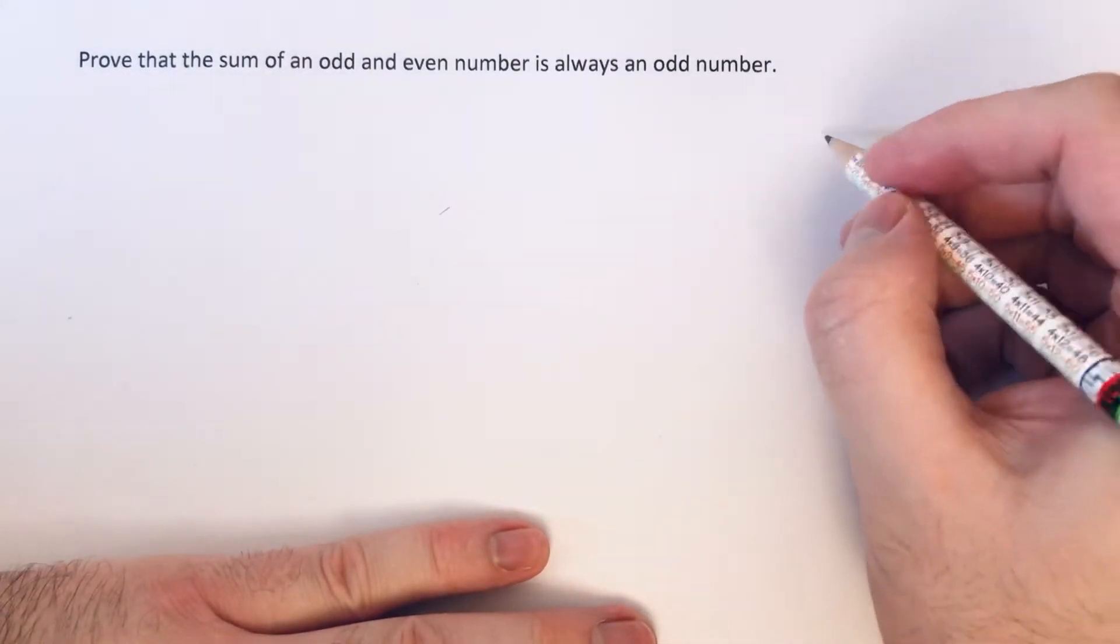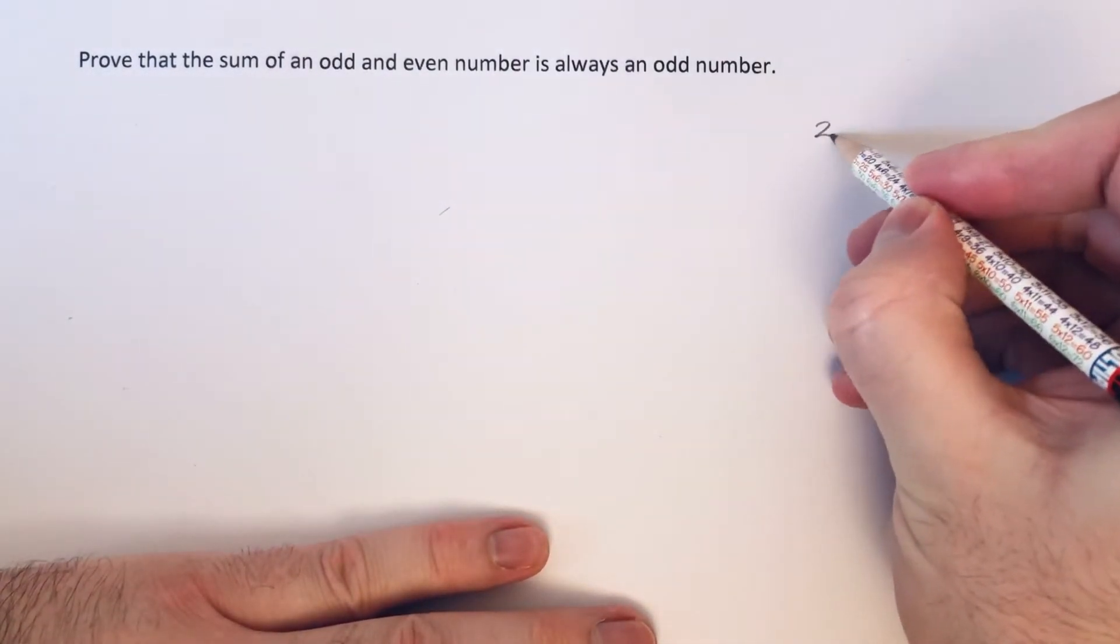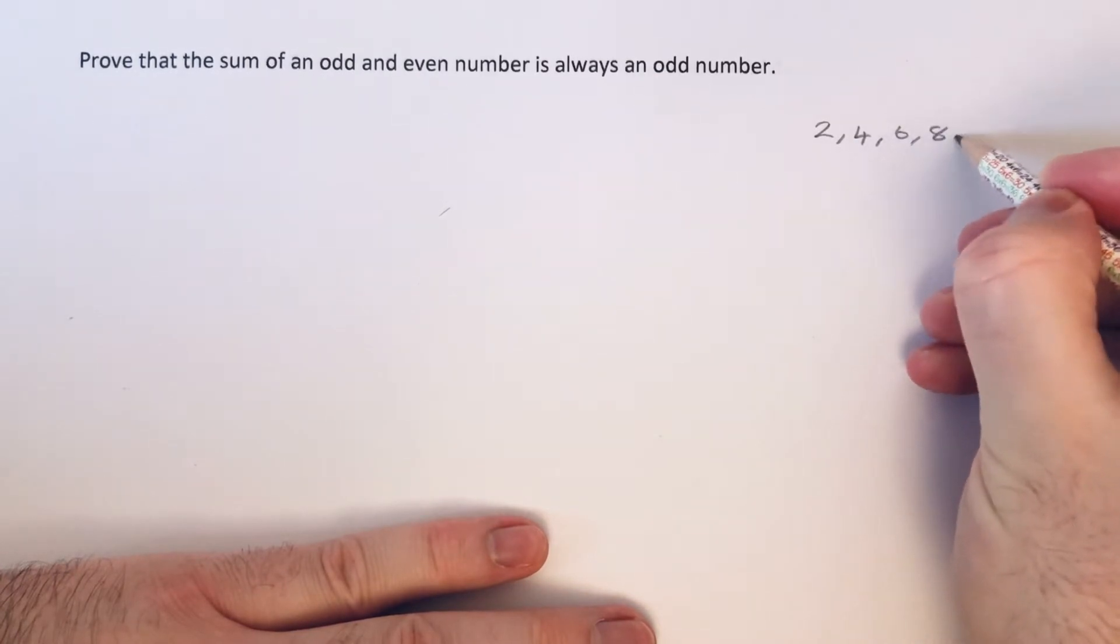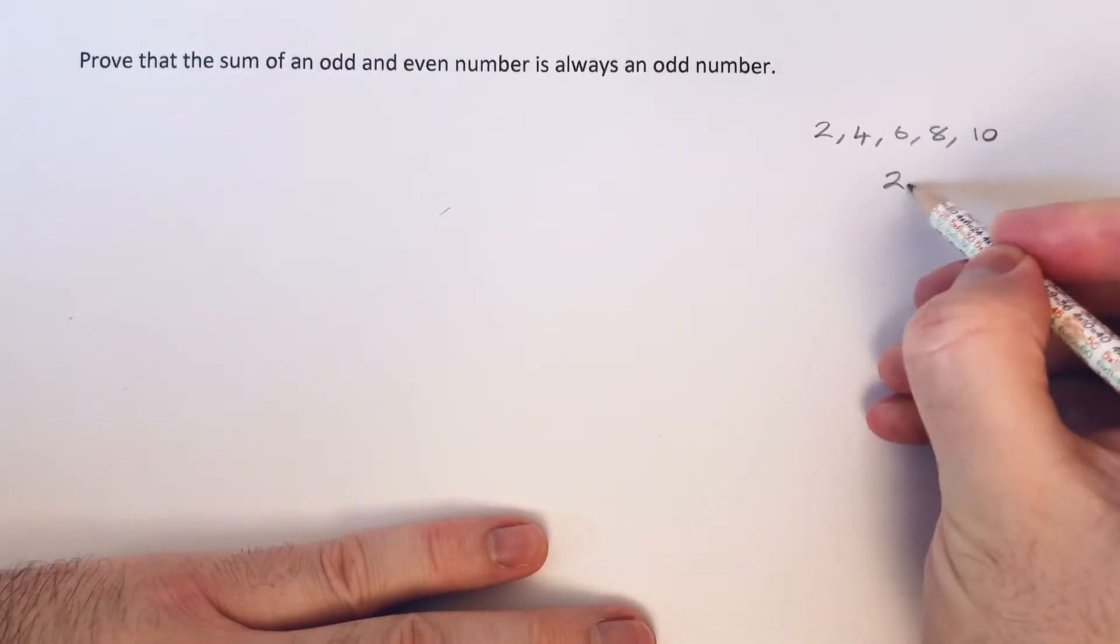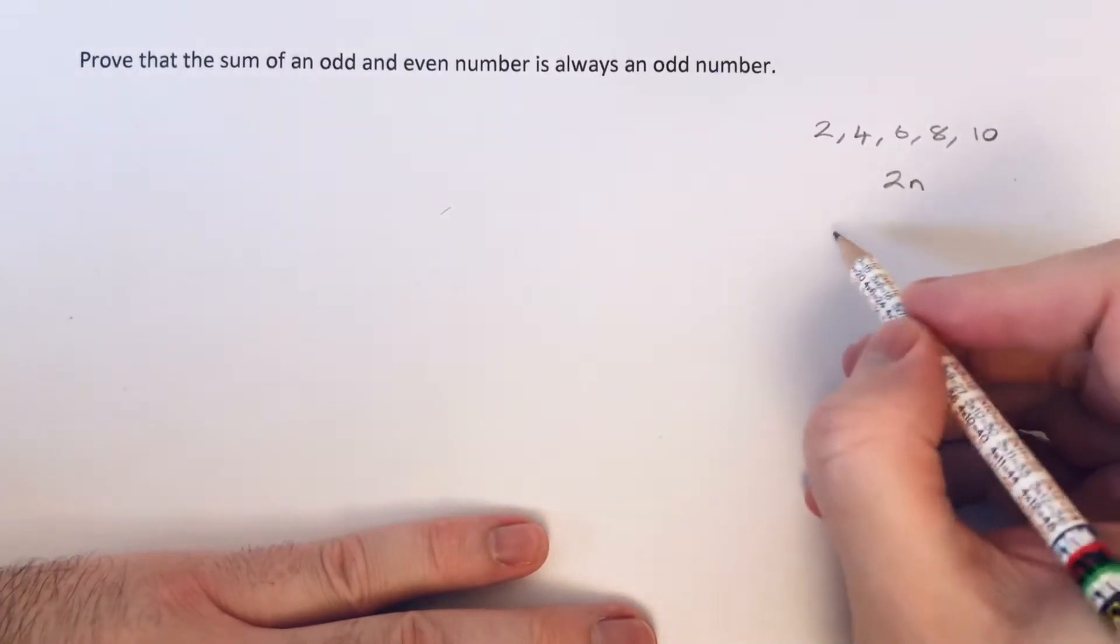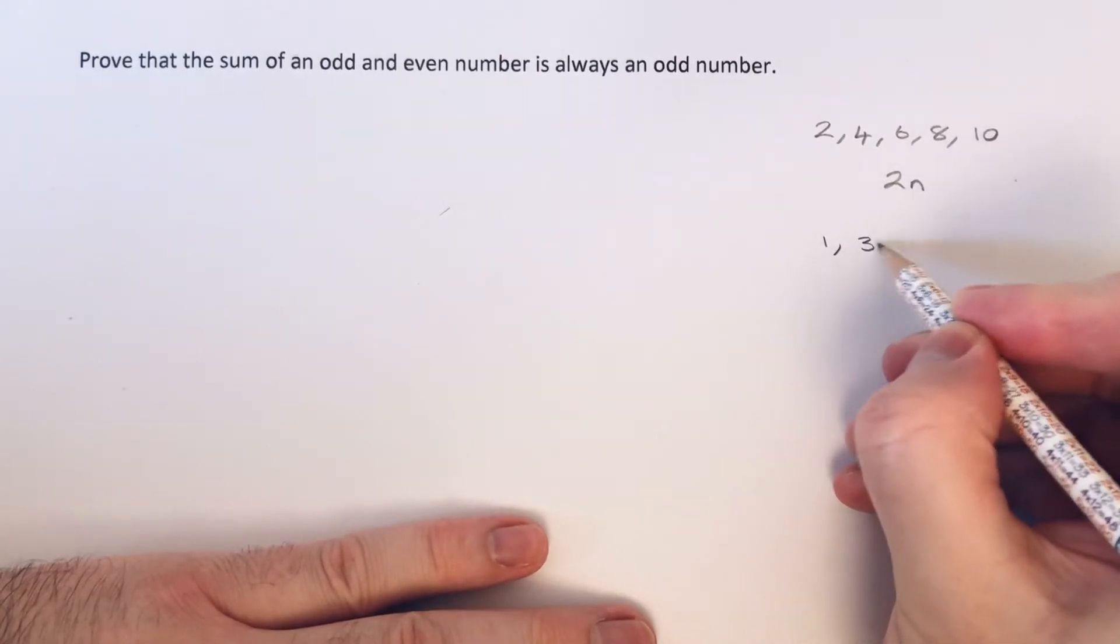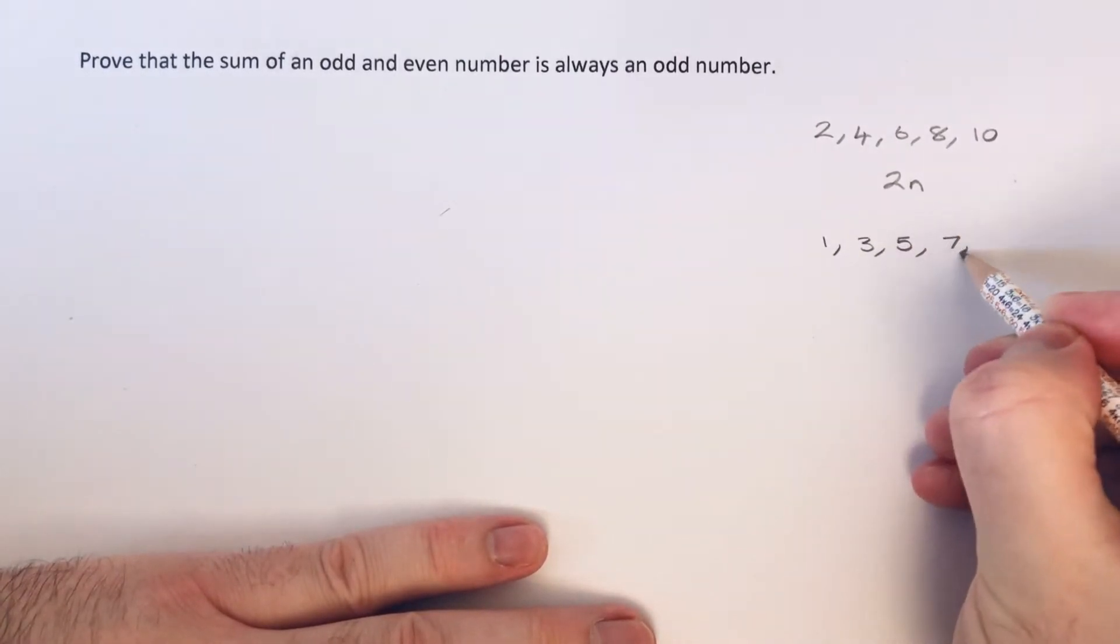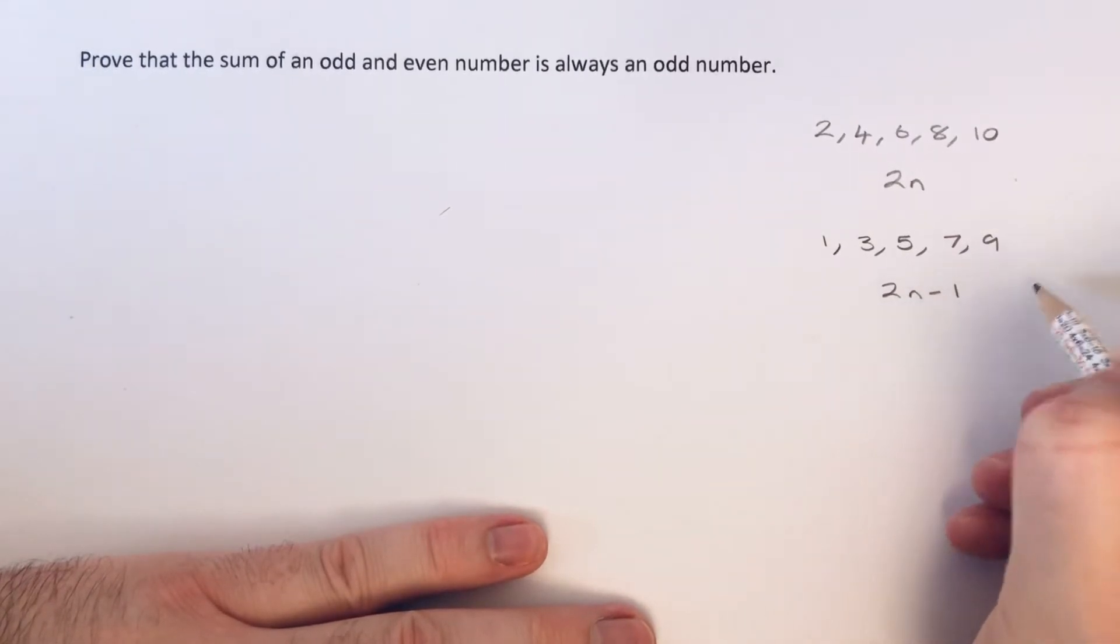Before you start this, you need to know that the nth term of an even number sequence is 2n, and the nth term of an odd number sequence is 2n minus 1.